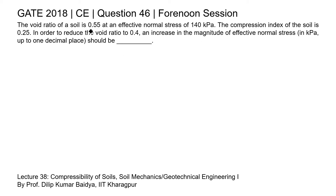In this question, the void ratio of a soil is given as 0.55 and the corresponding effective normal stress is 140 kilopascal. The compression index of that soil is given as 0.25. In order to reduce the void ratio to 0.4, we need to find the increase in the magnitude of effective normal stress.